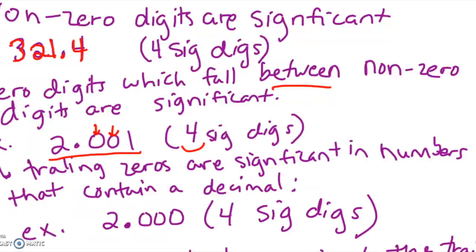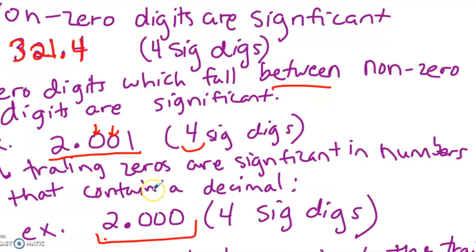The third rule: all trailing zeros are significant in numbers that contain a decimal. For example, 2.000 — the trailing zeros are actually measured zeros. Since this number contains a decimal, those zeros are significant, so there are four significant digits.